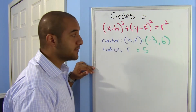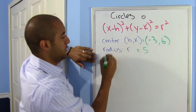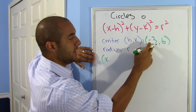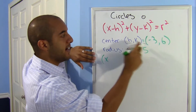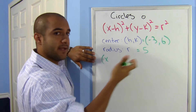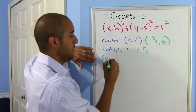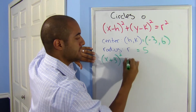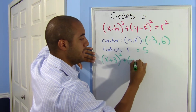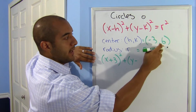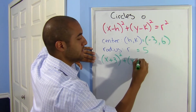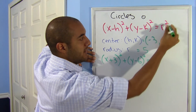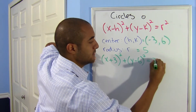all you're doing is substituting. Here I would have x — now notice that it's minus h, so it should be minus negative 3. Well, minus negative is plus, so I'm going to write plus 3 squared, plus y minus my k, which is 6, squared, equals 5 squared, which is 25.